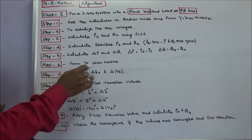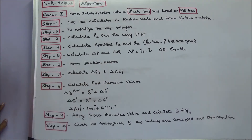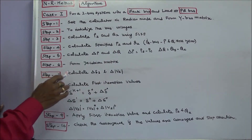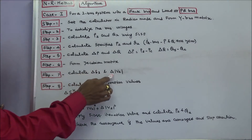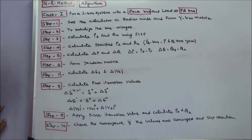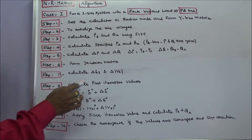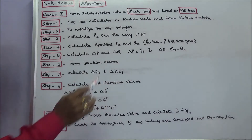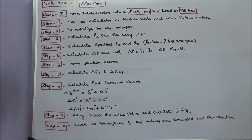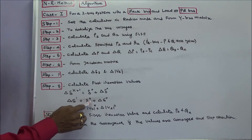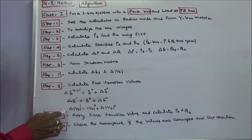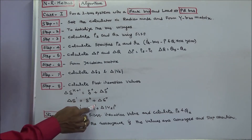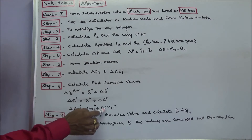Step 6: form the Jacobian matrix. Step 7: calculate change in delta 2 and change in modulus of V2. Step 8: calculate the first iteration value — that is the old value plus the difference. Similarly, the first iteration value of delta modulus of V2 is old value plus the difference.